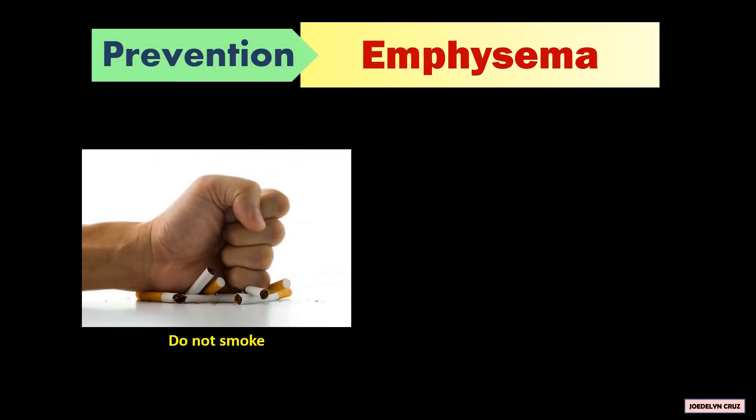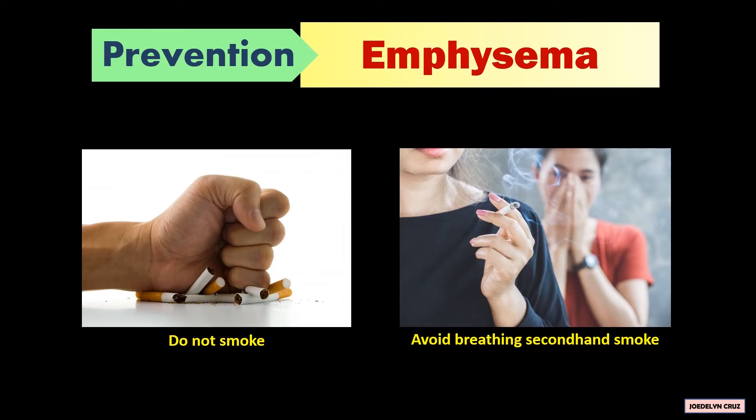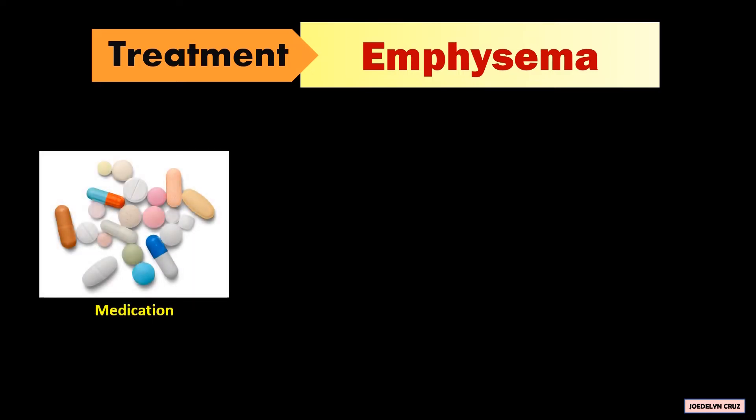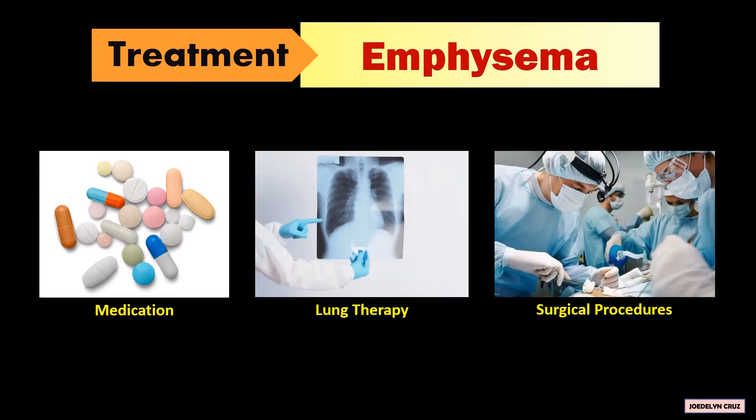To prevent emphysema, do not smoke and avoid breathing secondhand smoke. A person with emphysema could be treated using prescribed medications, lung therapy, and surgical procedures.